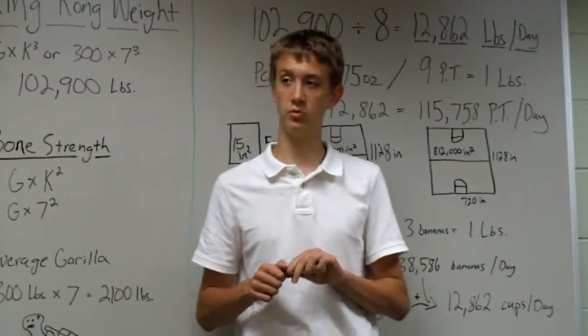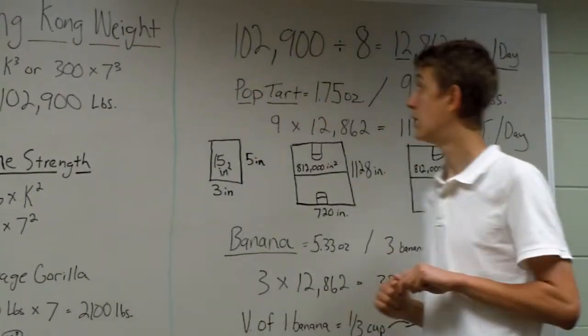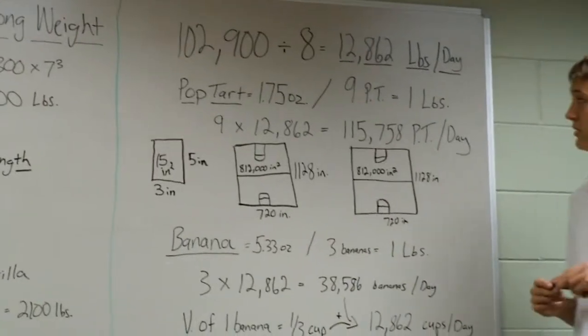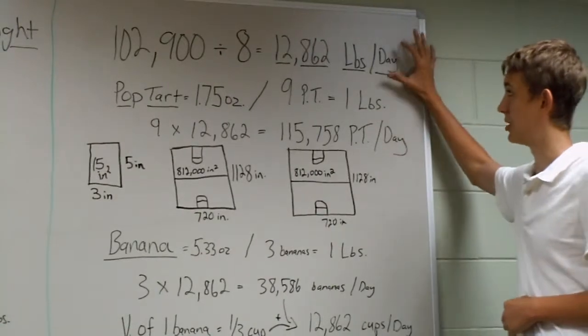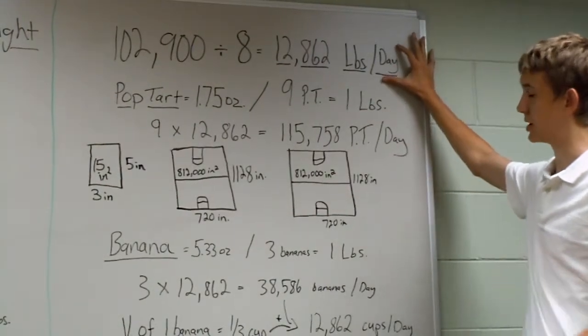Now let's talk about what would you need to feed him. An average ape needs to eat one-eighth his weight. For King Kong, that's about 12,800 pounds a day.